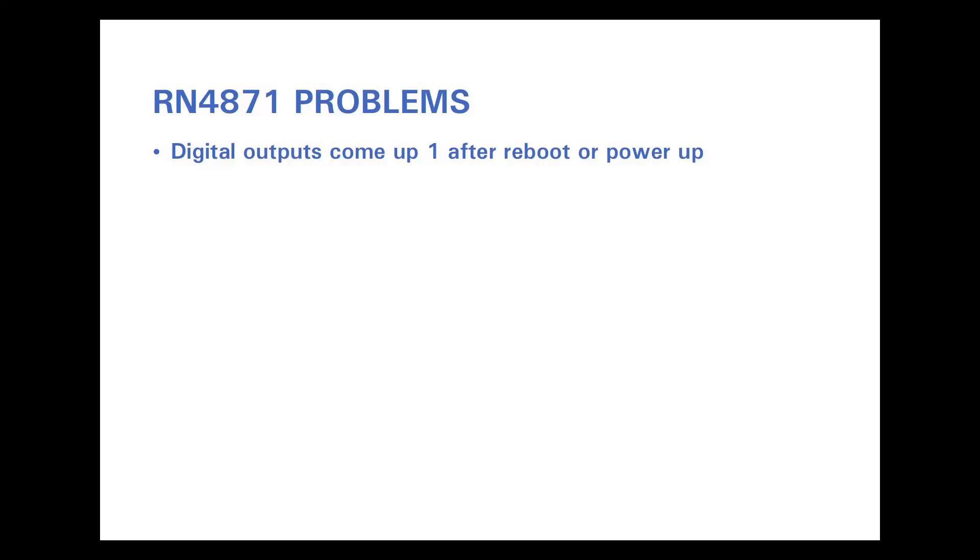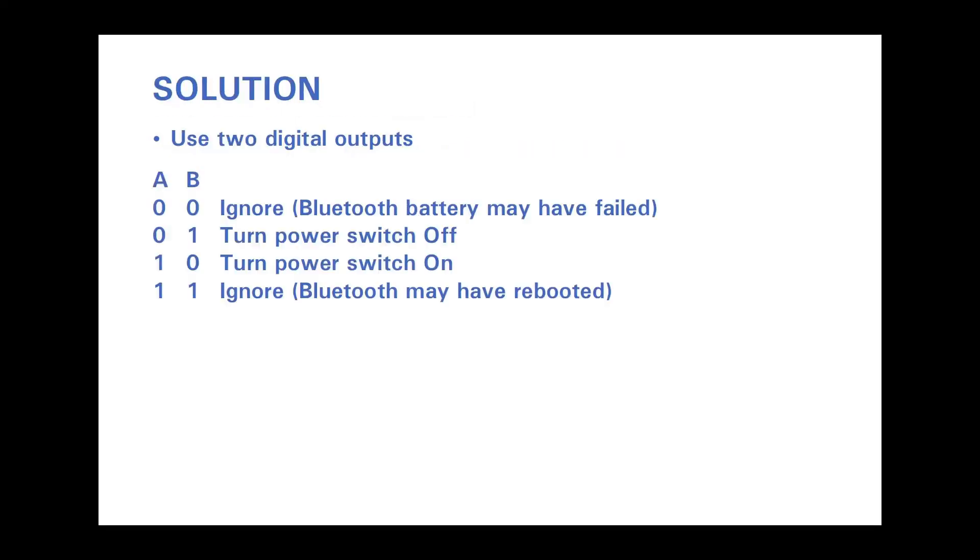Whilst trying to meet these requirements, I discovered various problems with the RN4871. Obviously, if the RN4871 battery fails, then its digital outputs will be 0. But I discovered that after a power-up or a reboot of the RN4871, its digital outputs come up in the 1 state. That meant that I couldn't trust the 0 state or the 1 state to tell me what I should be doing. And it led me to conclude that I have to use not a single digital output, but two digital outputs. In this solution, I used two digital outputs, A and B, and have logic in hardware that ignores the 0-0 state and the 1-1 state, and only pays attention to the other two possible states, the 0-1 and the 1-0 state, as being valid commands to change the state of the power switch. That was obviously an additional complication that I would have rather not had to handle.